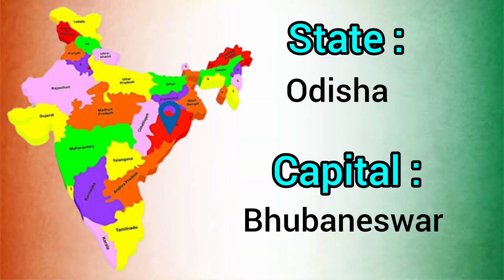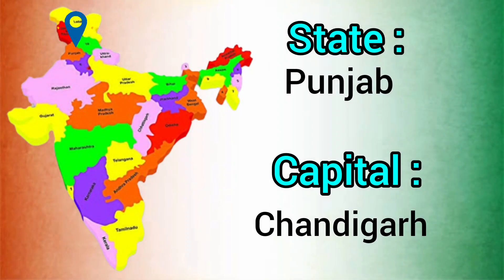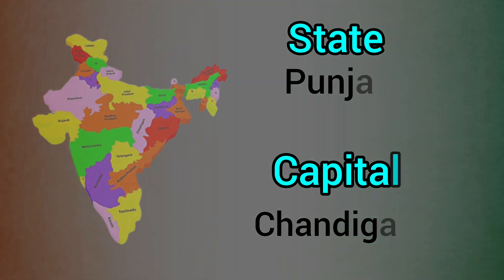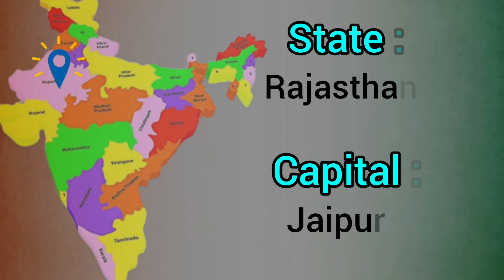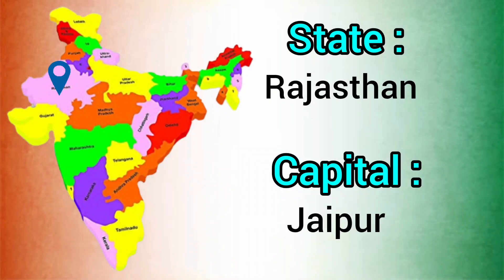State: Odisha. Capital: Bhubaneswar. State: Punjab. Capital: Chandigarh. State: Rajasthan. Capital: Jaipur.